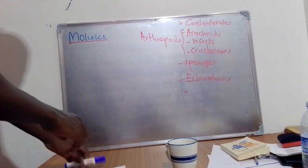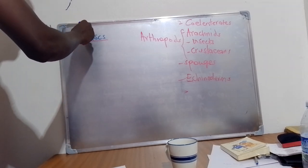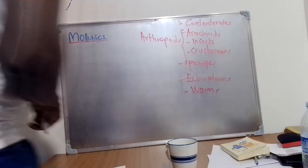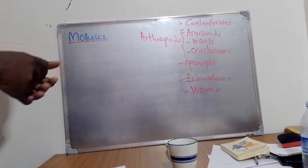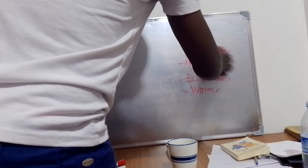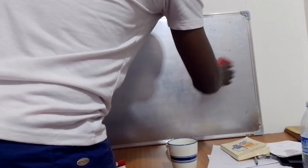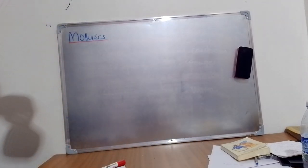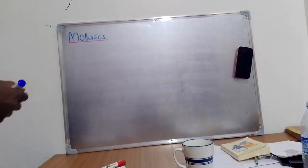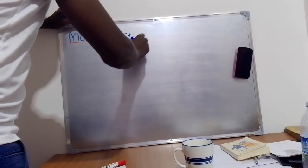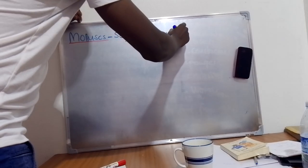Mollusks is spelled with a double L. From mollusks we shall later look at worms. It would be enough to say we now understand what invertebrate animals are — by definition, invertebrate animals are animals whose bodies do not contain a backbone. Today we are looking at mollusks, which are soft-bodied invertebrates.